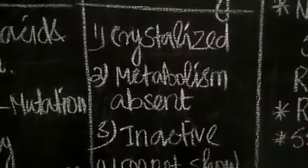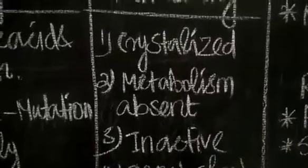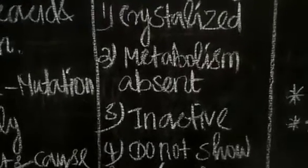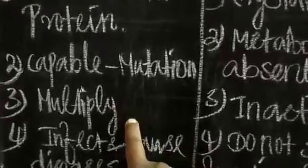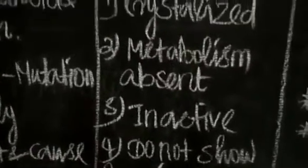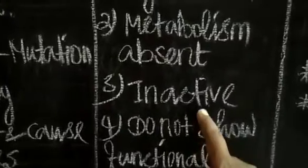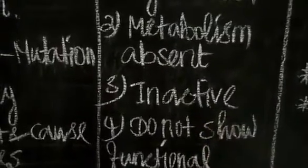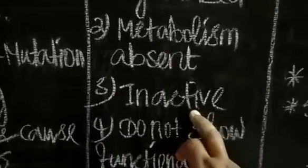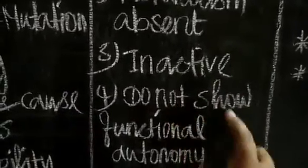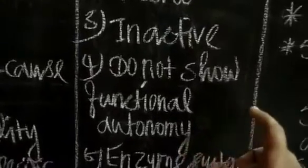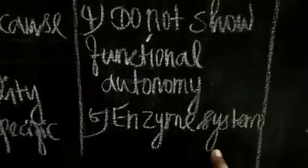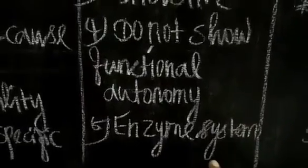The multiplication is in living cells. There are metabolic activities. Inactive outside the host - mostly outside the host is in the inactive condition. And do not show functional autonomy.